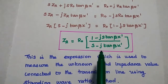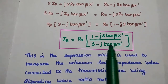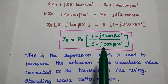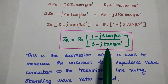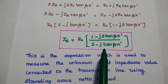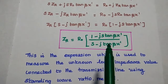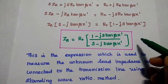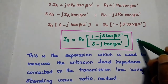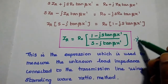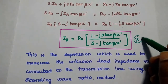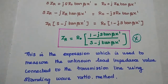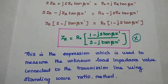This is the formula used to measure the unknown load impedance value in the transmission line using the standing wave method. This is a very important formula used to measure the unknown value of the load impedance.